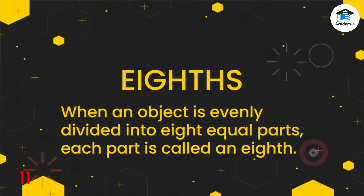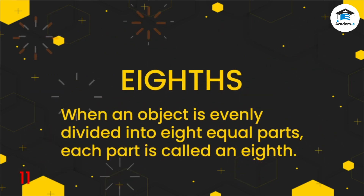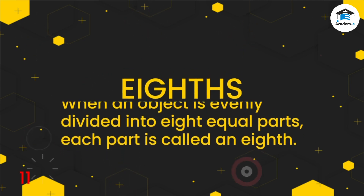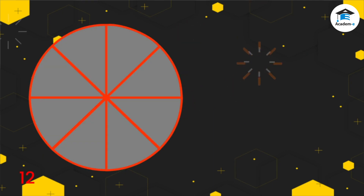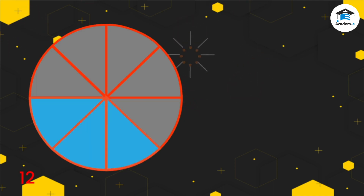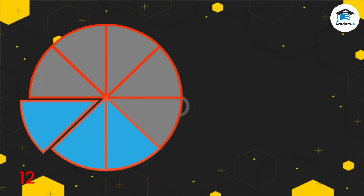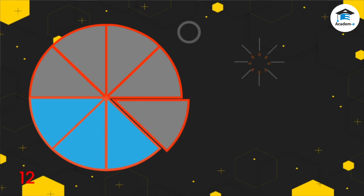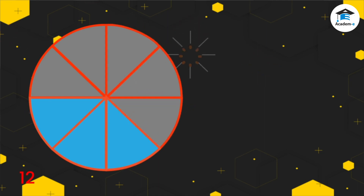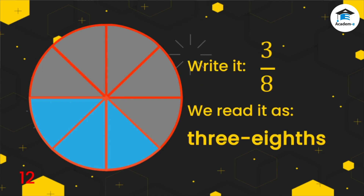What is eighths? When an object is evenly divided into 8 equal parts, each part is called an eighth. Let's have an example. Look at the figure below. It's divided into 8 equal parts. We are going to color 3 eighths of the circle. In this figure, we colored 3 out of 8. How many parts are being shaded? 1, 2, 3. There are 3 parts that are shaded. How many equal parts are there? 1, 2, 3, 4, 5, 6, 7, 8. There are 8 equal parts. We write it like this, and we read it as 3 eighths.